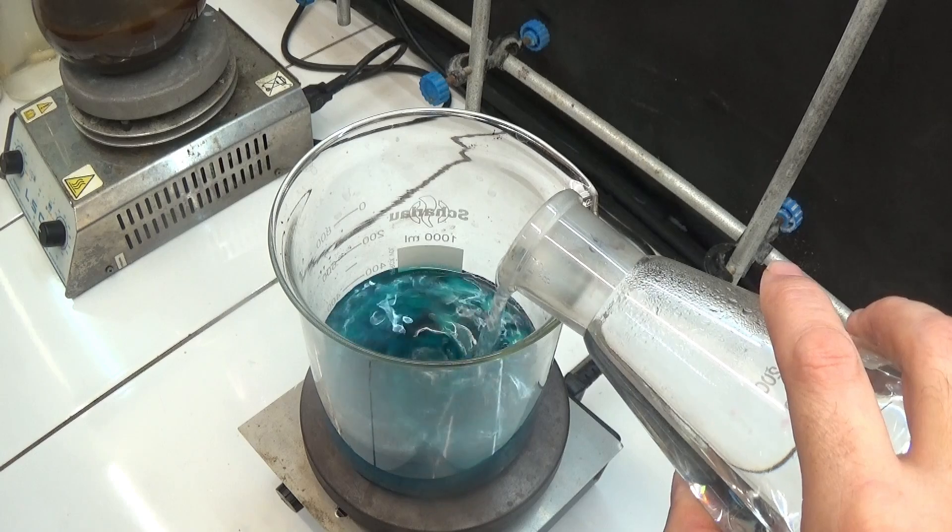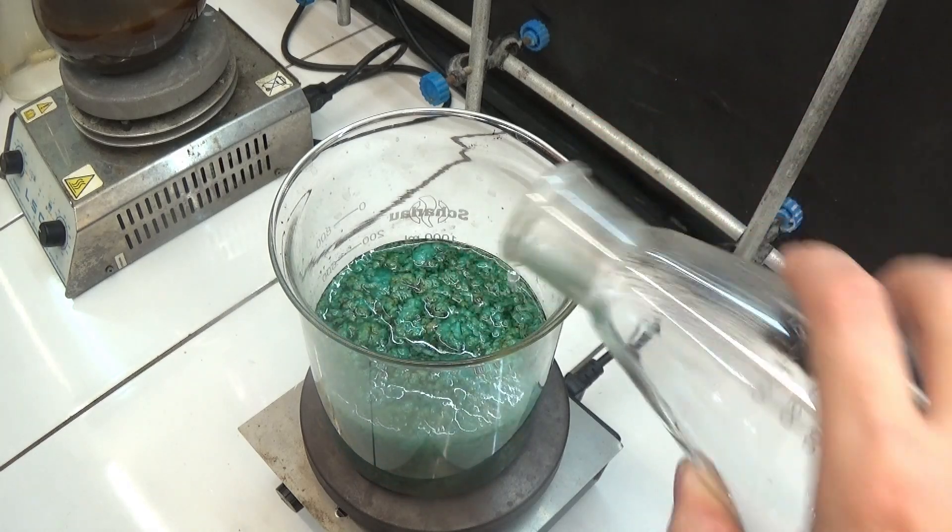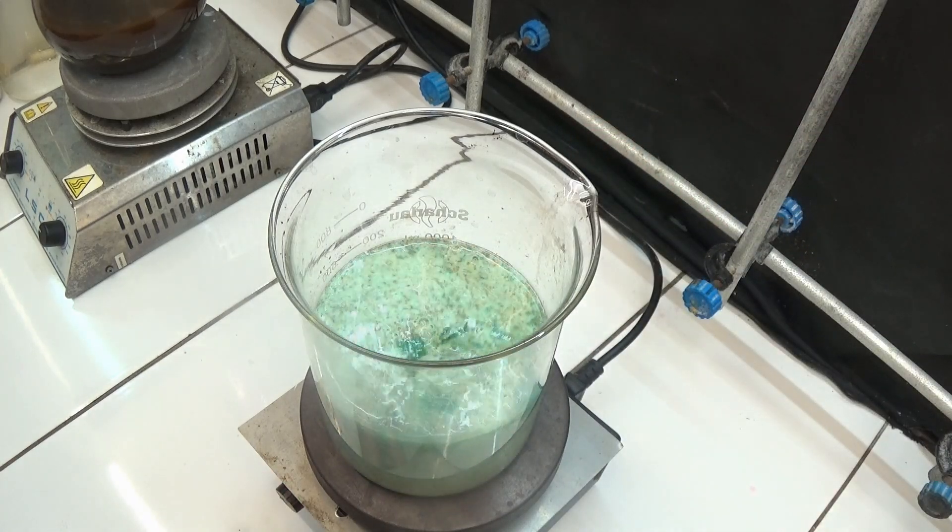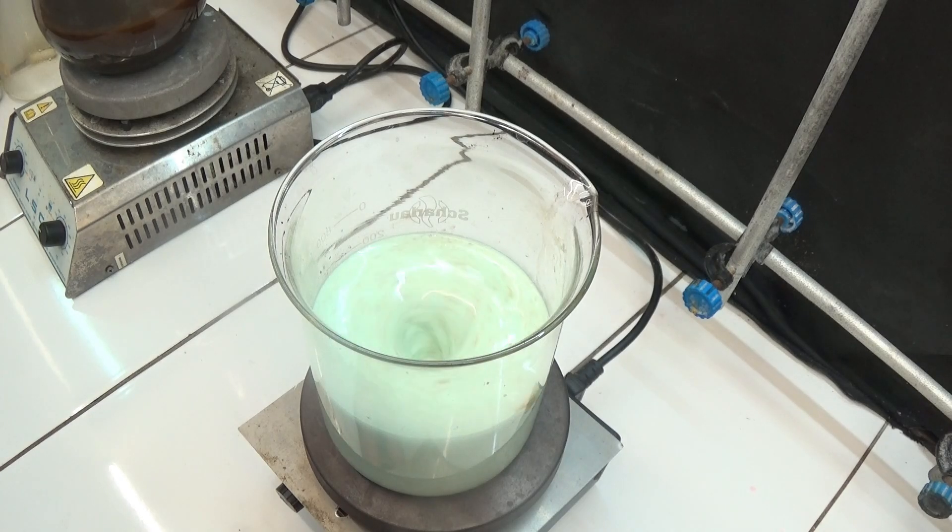Add the sodium hydrogen sulfite solution over the copper sulfate solution, stirring slowly. A precipitate of white color is formed. This is the copper chloride.